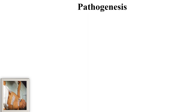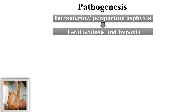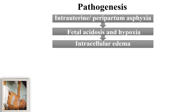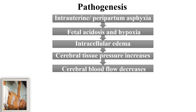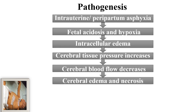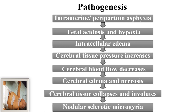The pathogenesis of cerebral palsy: whenever there is intrauterine or peripartum asphyxia in the fetus or newborn, it leads to fetal acidosis and hypoxia, causing intracellular edema. This leads to increased cerebral tissue pressure, decreased cerebral blood flow, and further cerebral edema and necrosis. The cerebral tissue collapses and involutes, leading to nodular sclerotic microgyria. This is the pathogenesis behind brain damage in the CP child during the fetal or infant period.